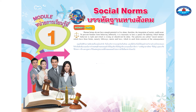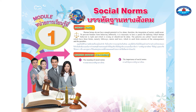Social norms have three forms: folkways, mores, and laws. Each form consists of consequences and penalties. Learning content: one, the meaning of social norms; two, the importance of social norms; three, the forms of social norms.